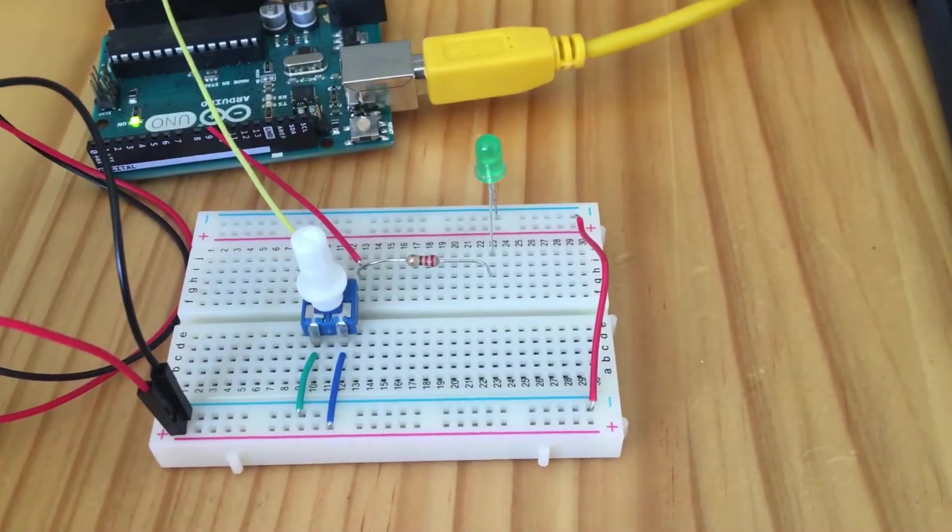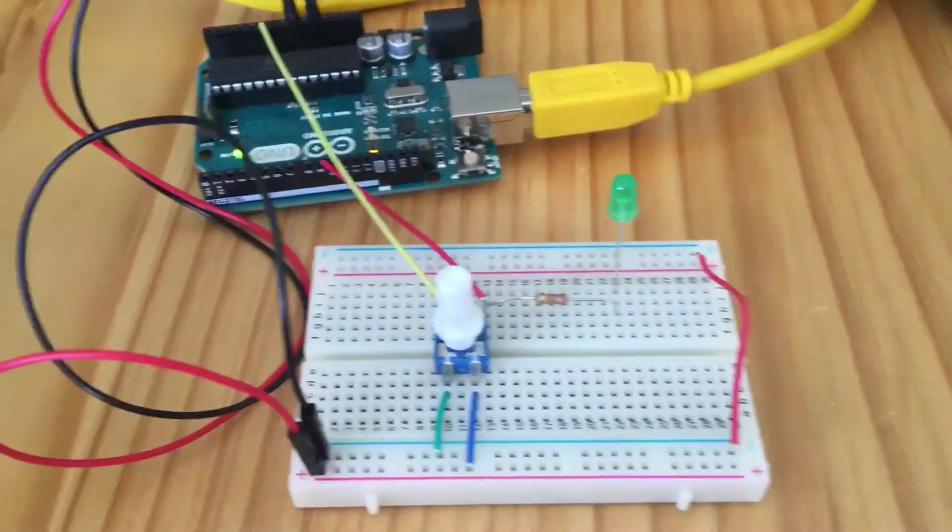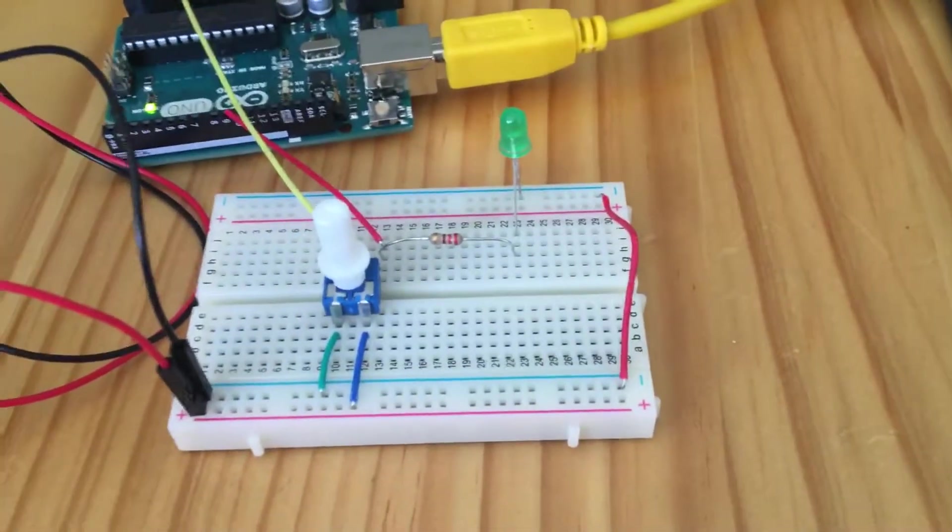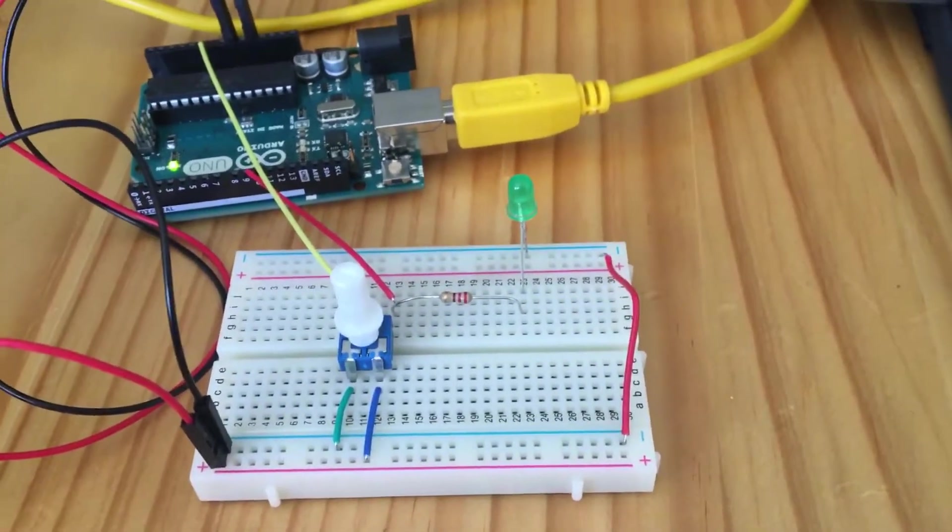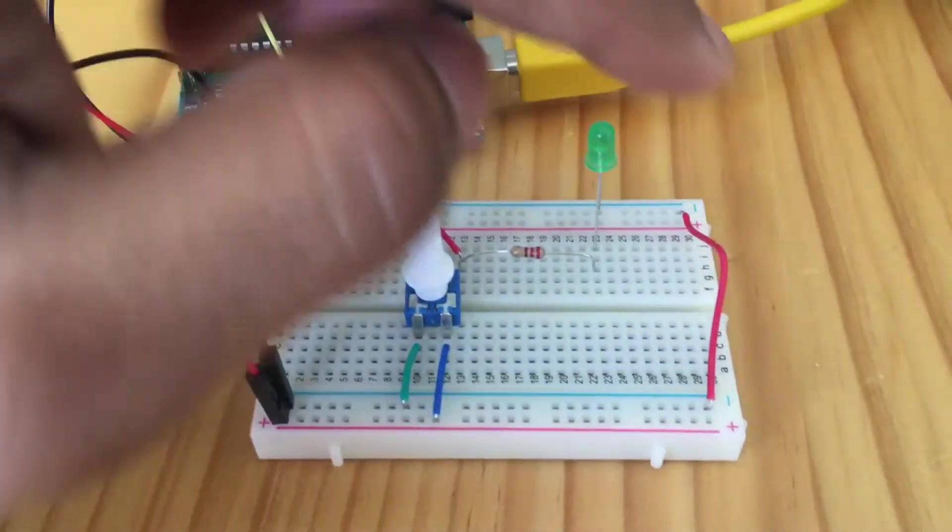My assignment is to use a potentiometer to light up an LED and control the brightness.